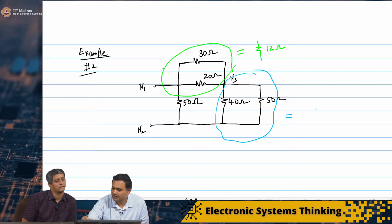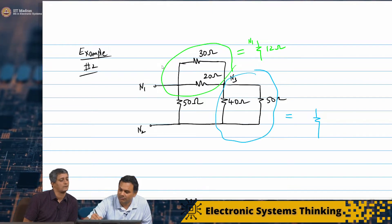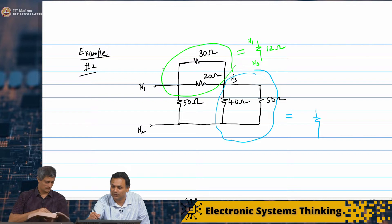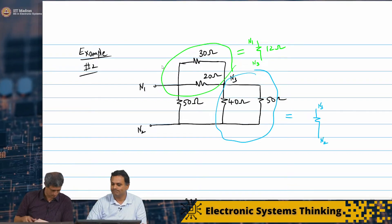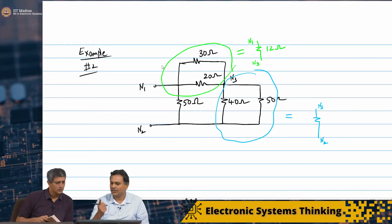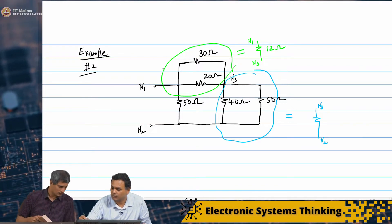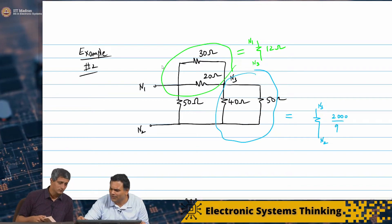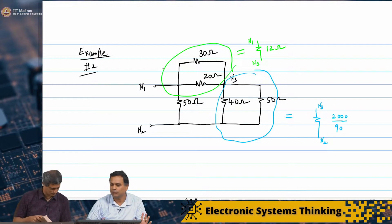Let me mark the nodes because we need to keep track of them. Between N3 and N2, I have 40 ohms and 50 ohms in parallel, which is 40 × 50 / (40 + 50) = 2000 / 90 ohms. I will keep it as 2000/90. Now I can redraw in one step.